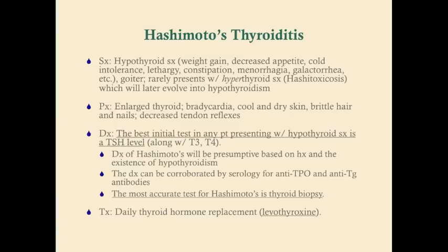Hashimoto's doesn't happen in children, so if you have a child that presents with hypothyroid symptoms, think of iodine deficiency. The diagnosis can and often is corroborated with serology for anti-TPO and antithyroglobulin antibodies to further support your diagnosis. However, the most accurate test for Hashimoto's thyroiditis, because it is an inflammatory disease, is going to be a thyroid biopsy, in which case you'll see lymphocytic infiltration of the thyroid tissue. The treatment for any chronic hypothyroidism is daily thyroid hormone replacement with oral levothyroxine.